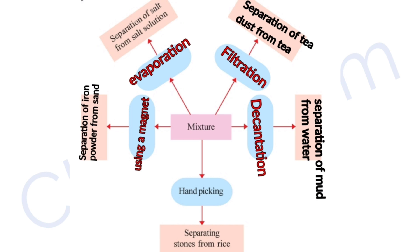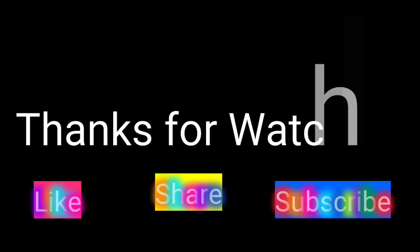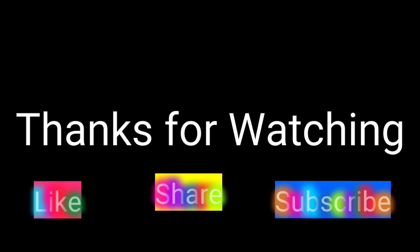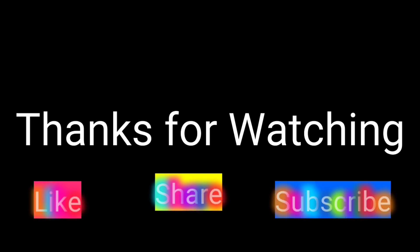We are going to demonstrate the hand-picking process. Using a magnet, we are going to make a separation of iron powder from sand.